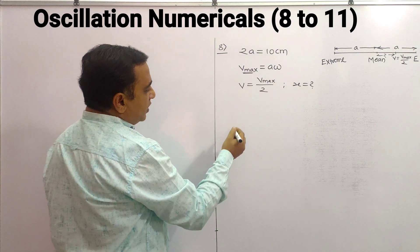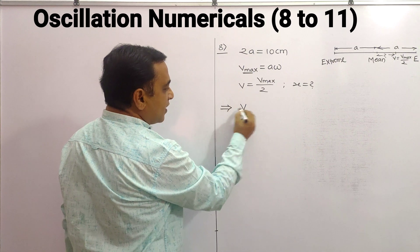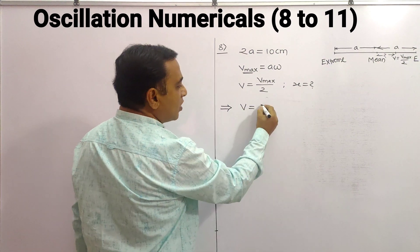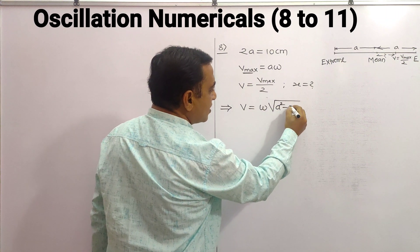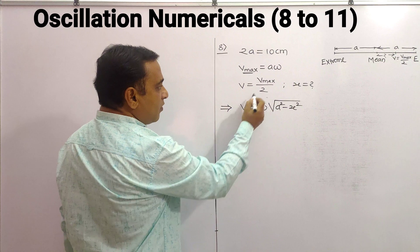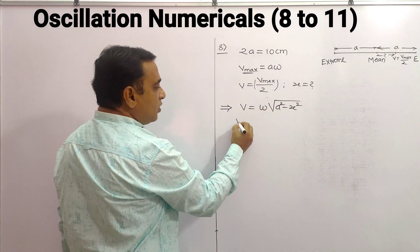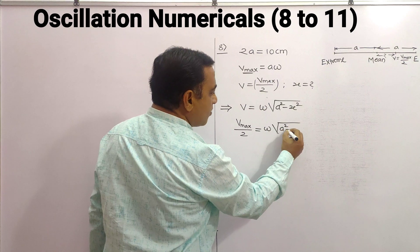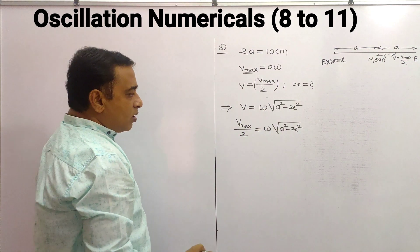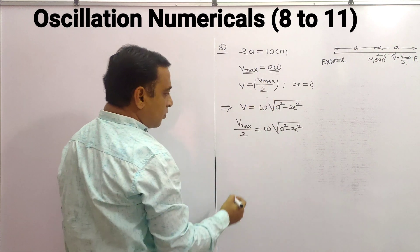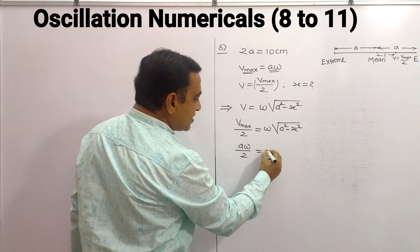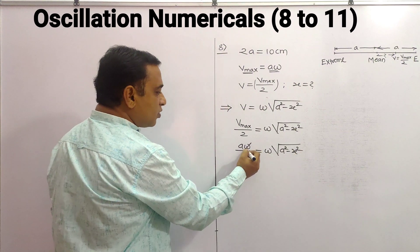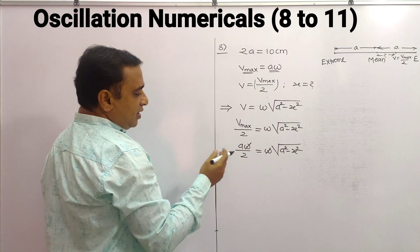To calculate that, we know the basic formula: v = ω · √(a² - x²). So substituting, v_max / 2 = ω · √(a² - x²). Since v_max = a·ω, we get a·ω / 2 = ω · √(a² - x²). The ω cancels from both sides.